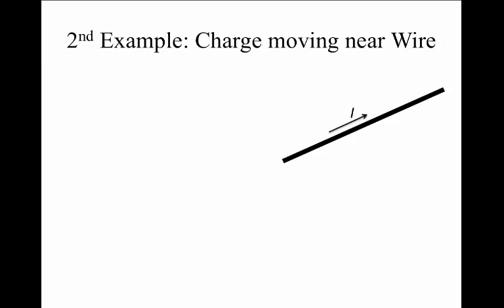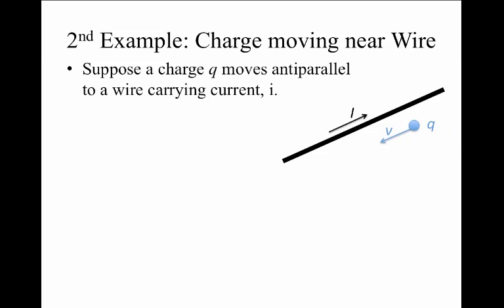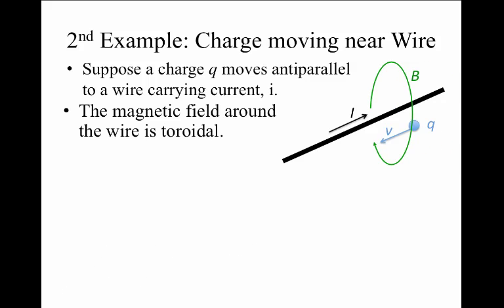Another example worth considering is what is the force on a charge that's moving near a wire. Imagine a wire that carries a current I, and there's a charge Q that's moving anti-parallel to the direction of the current flow. If you're standing out there in the lab at rest relative to the wire, you would say, I see a current, and therefore there's going to be a magnetic field propagating around the current using the right-hand rule.